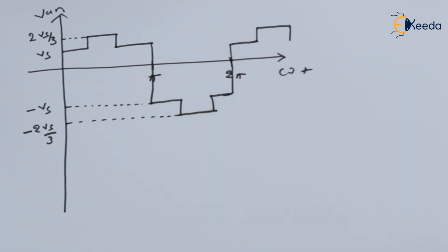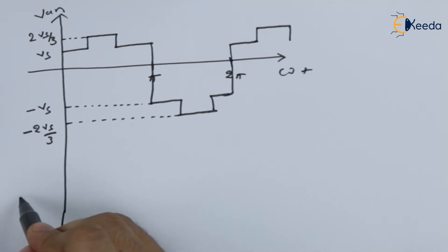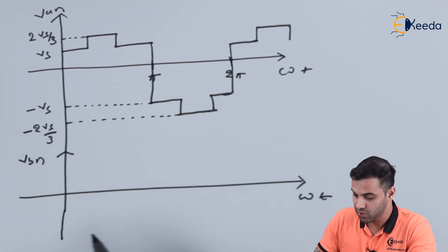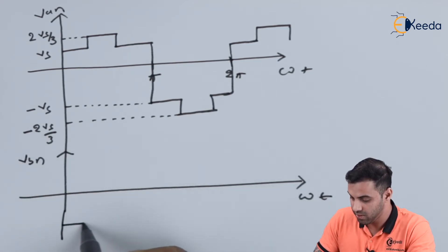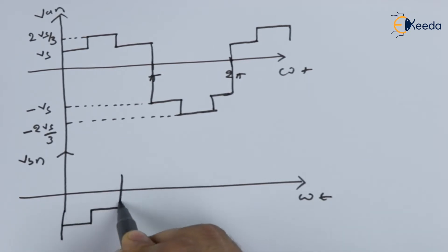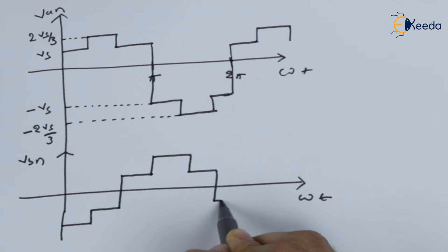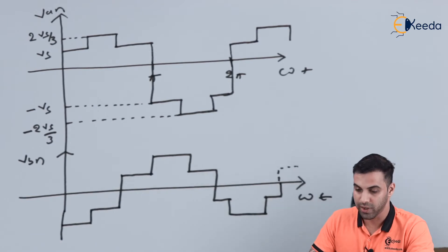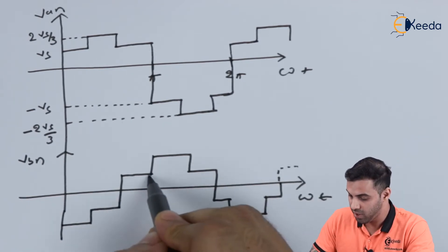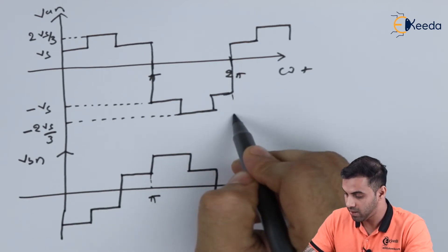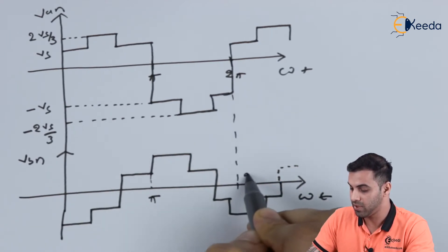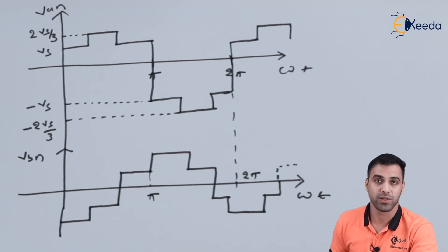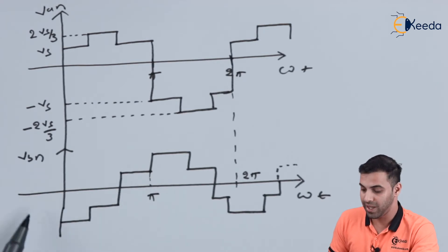Looking at what happens to VBn: with omega-t on the x-axis and VBn on the y-axis, the waveform takes a shape where this is π and this value is 2π, and the process keeps on continuing. This is how the voltage across phase B, or VBn, looks.